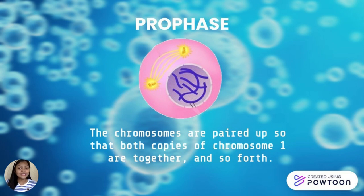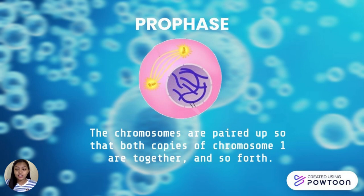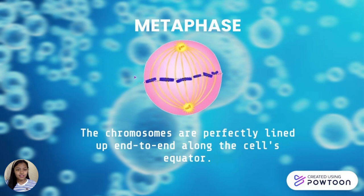First, we have prophase. Under a microscope, the chromosomes condense into X-shaped structures that are plainly visible. Each chromosome is made up of two sister chromatids, each of which contains the same genetic material. The membrane around the nucleus in the cell dissolves at the conclusion of prophase, freeing the chromosomes. The mitotic spindle, which is made up of microtubules and other proteins, spans the cell and connects the centrioles as they travel to opposite poles.